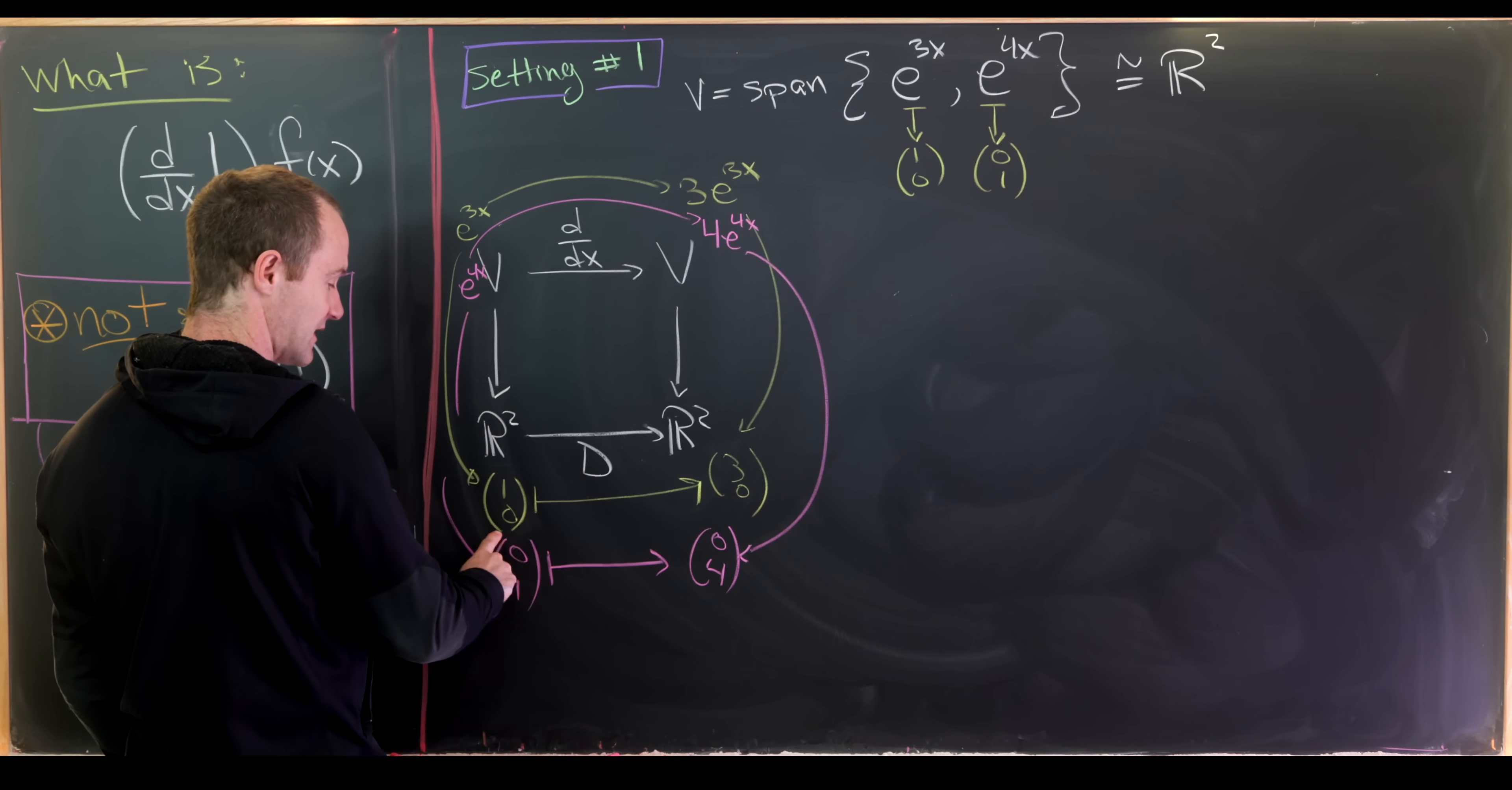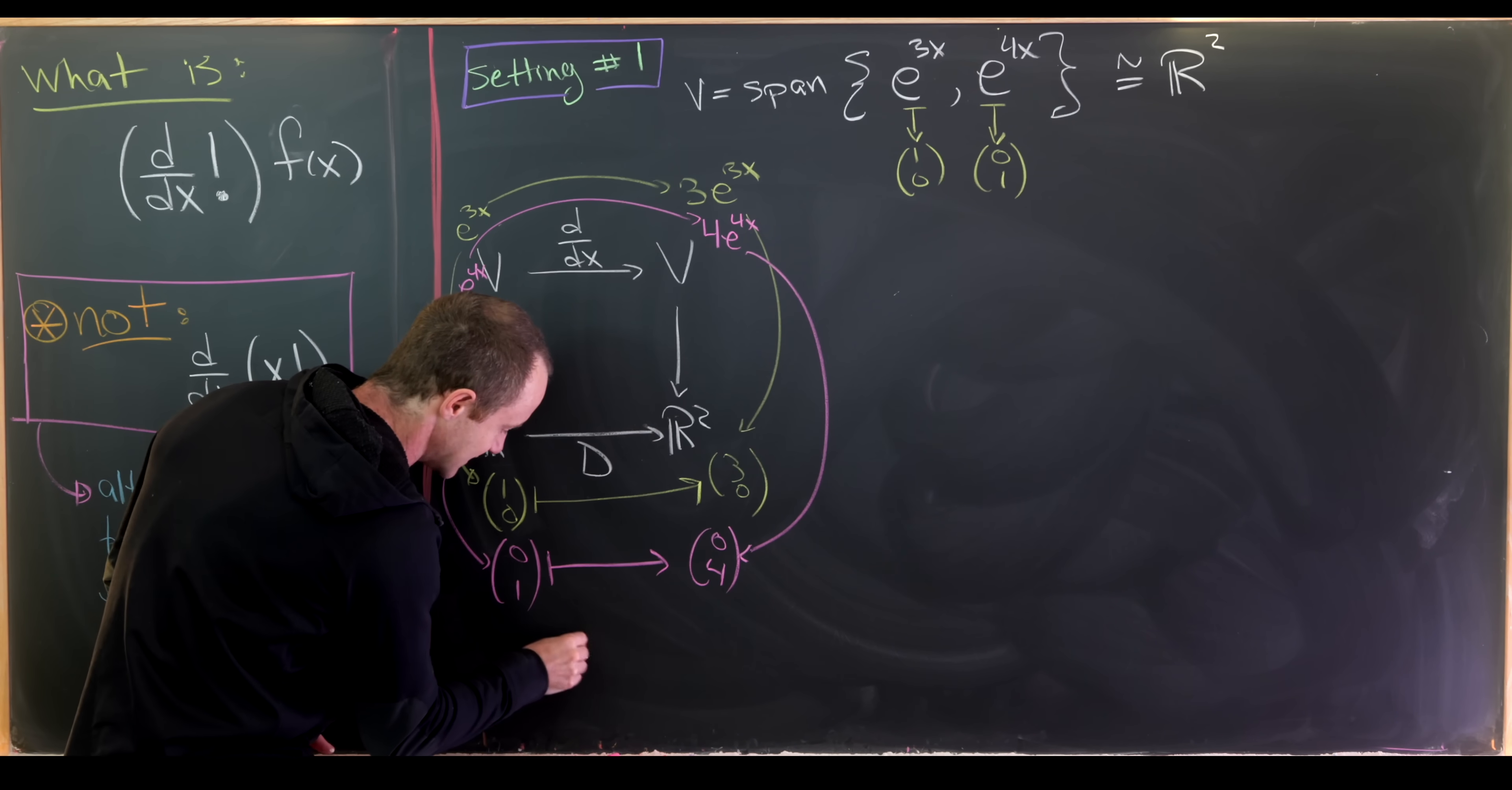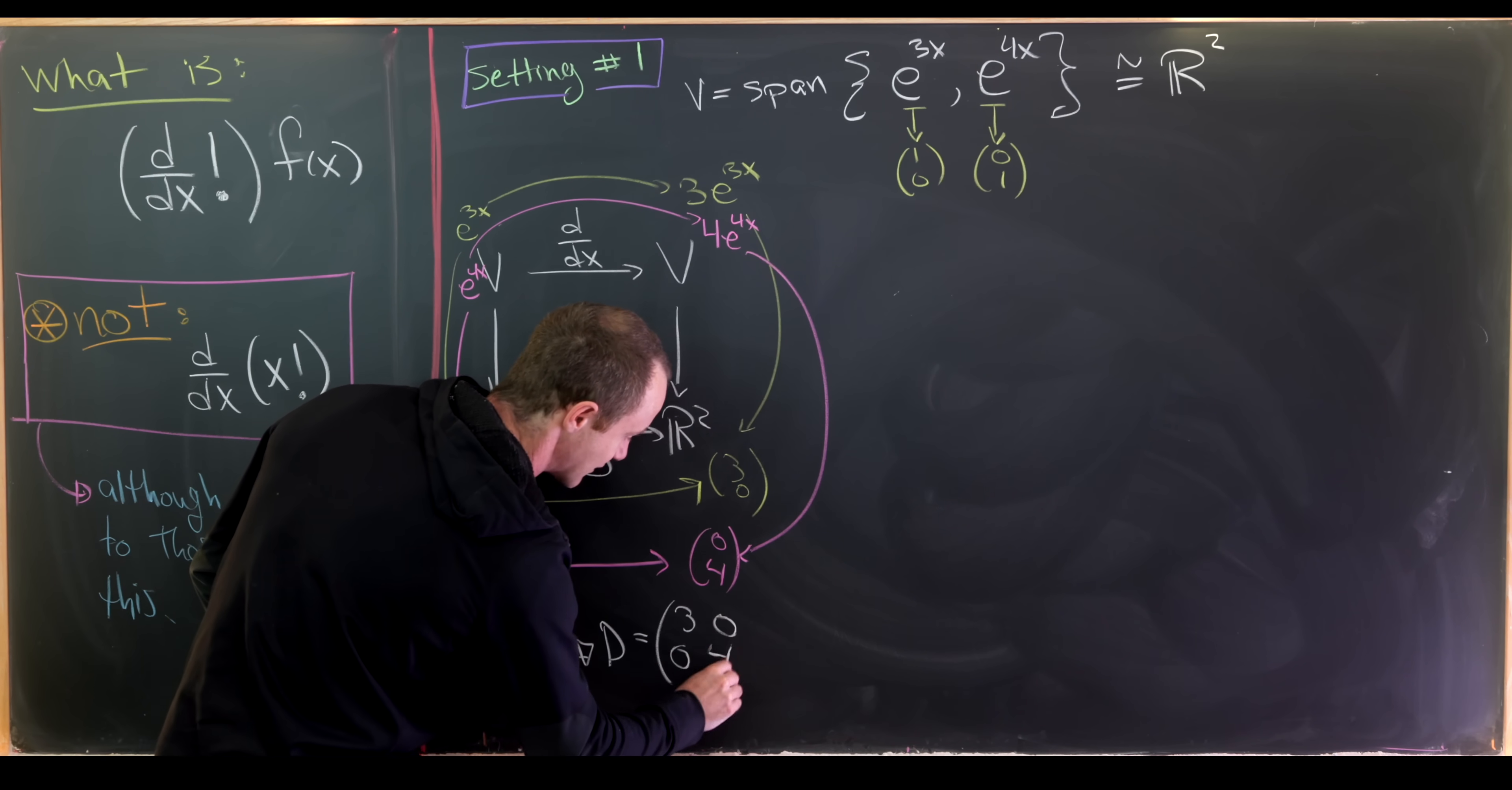Now we'll do the same thing with e to the 4x. So e to the 4x will be sent to the vector 0, 1. It'll also be mapped over here via the derivative to 4e to the 4x, which gets mapped down here to 0, 4. So we need our matrix D, which is representing this derivative, to take this basis vector 1, 0 to 3, 0, and this basis vector 0, 1 to 4, 0. So that tells us that our matrix D should simply be the diagonal matrix 3, 0, 0, 4.